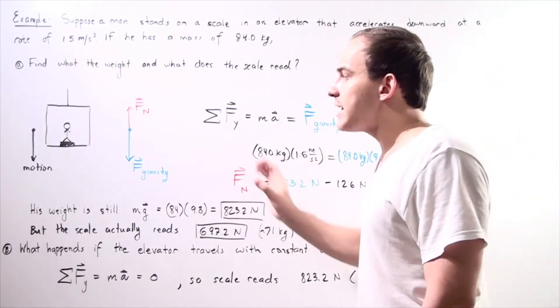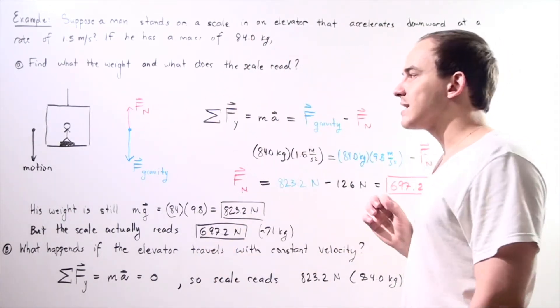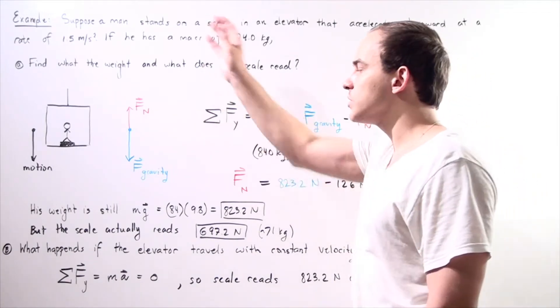Because our motion is downward, we choose the downward direction along the y-axis to be positive and the upward to be negative.